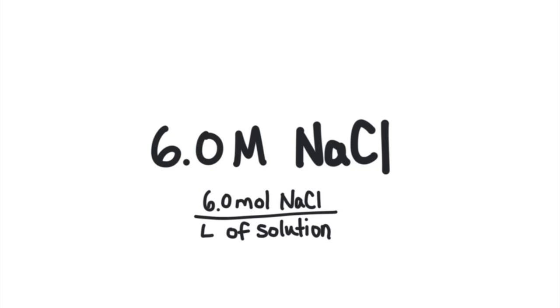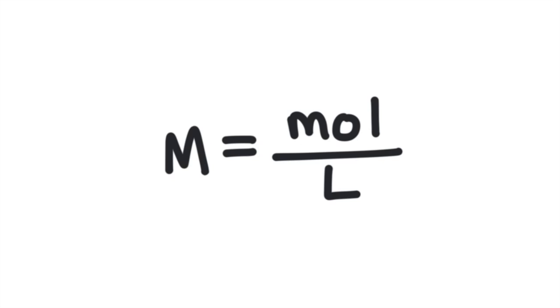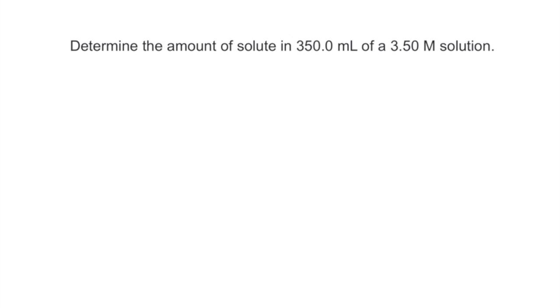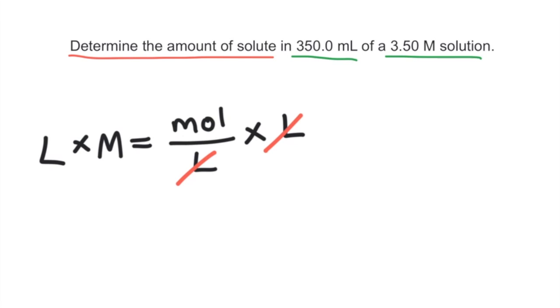The equation to calculate molarity is moles over liters. Let's try using this equation. Determine the amount of solute in 350 milliliters of a 3.5 molar solution. We know the equation is moles divided by liters of solution. So if we want to solve for moles, we can rearrange the equation by multiplying both sides by the volume in liters. So moles is going to be equal to the concentration in molarity times liters of solution.